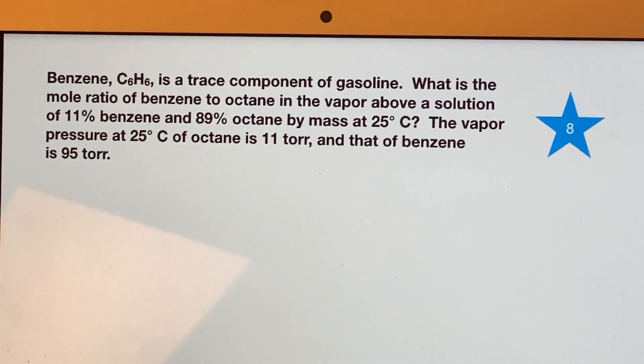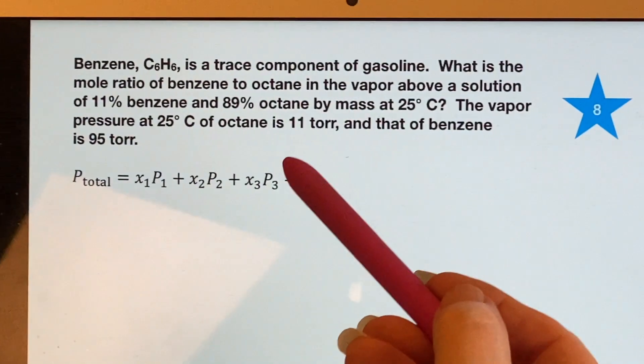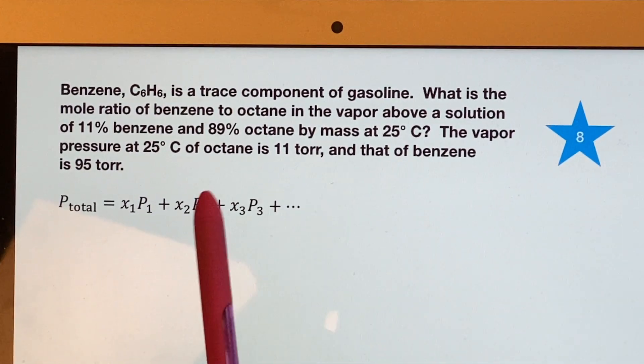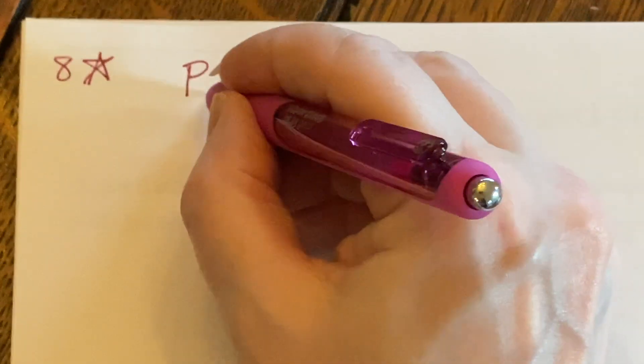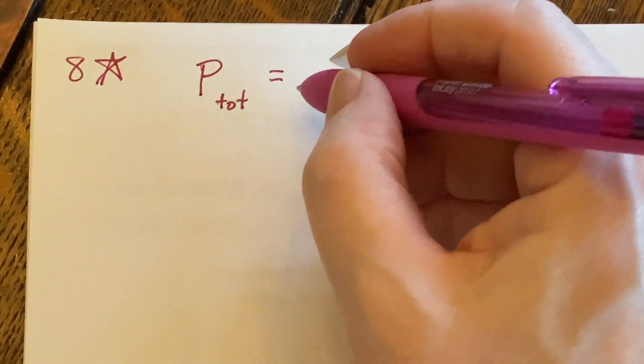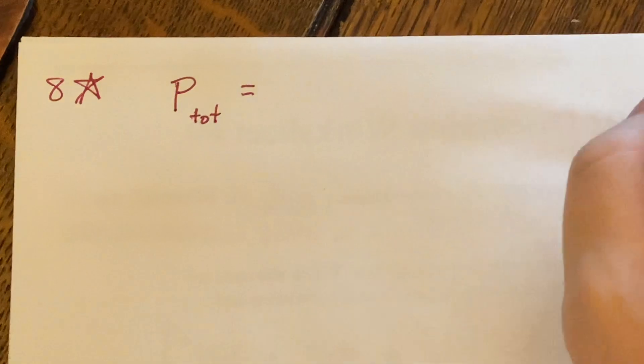What are we going to use to deal with this problem? It's going to be our friend here. Only thing is I only have two things, so I don't need any additional ones. It's just these first two. Now notice this is not going to finish our problem because it's asking for the mole ratio of benzene to octane in the vapor. This is going to get us there.